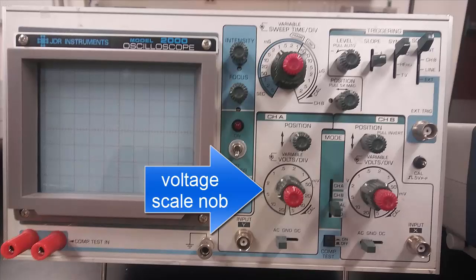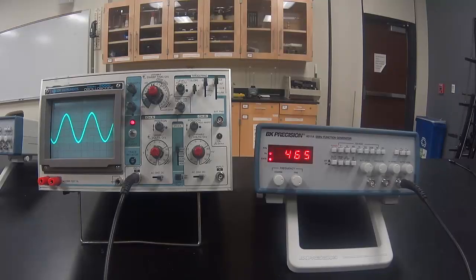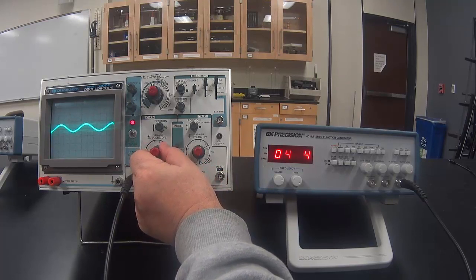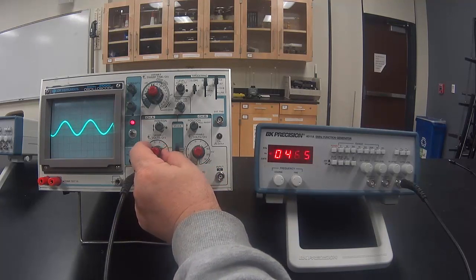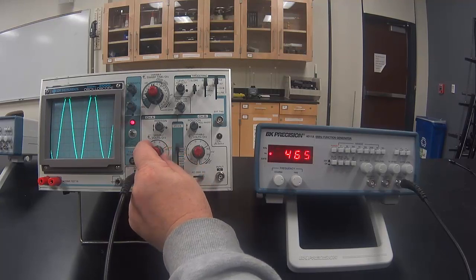The green knob is the voltage scale knob. It's marked off in units of voltage per division. Adjusting the volts per division knob to a higher setting causes the signal to be smaller on the screen, and to a lower setting causes the signal to be bigger on the screen.